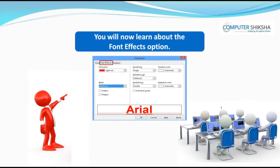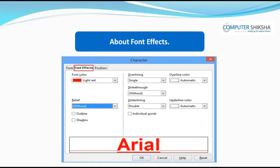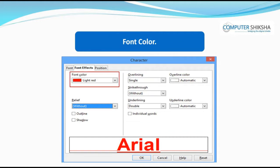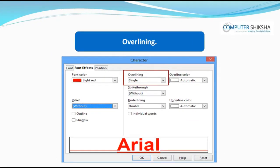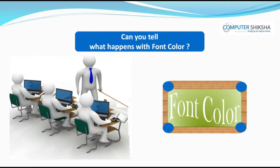You will now learn about the Font Effect option. Font Effect is also a part of the Character submenu. You will see many options in Font Effect like font color, outline, shadow, overlining, strikethrough, underline, etc. Can you tell what happens with font color?